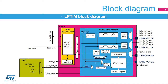The low-power timer features an encoder mode function that can be used to interface with incremental quadrature encoder sensors using the peripheral's LP-TIM-N1 MUX and LP-TIM-N2 MUX inputs. Both inputs feature glitch-filtering circuitry.